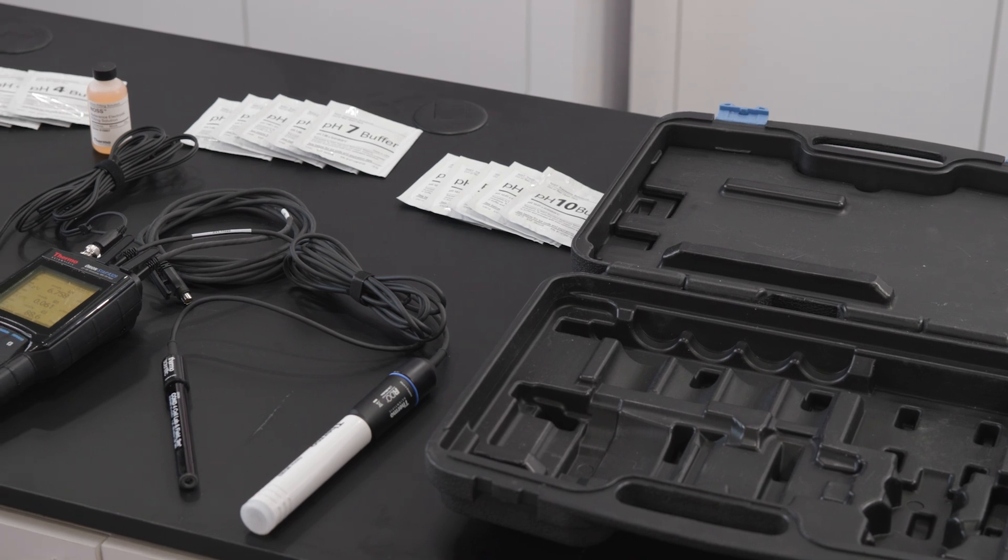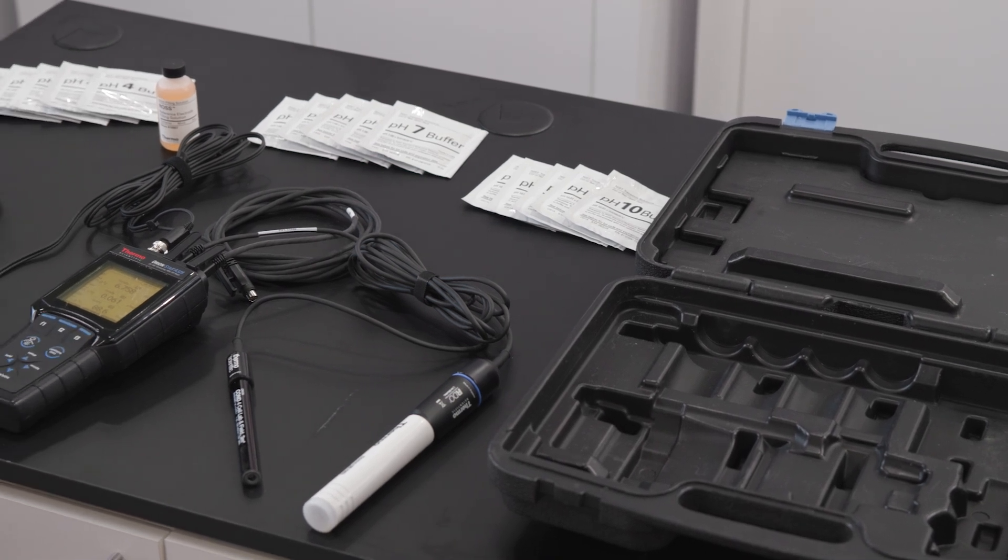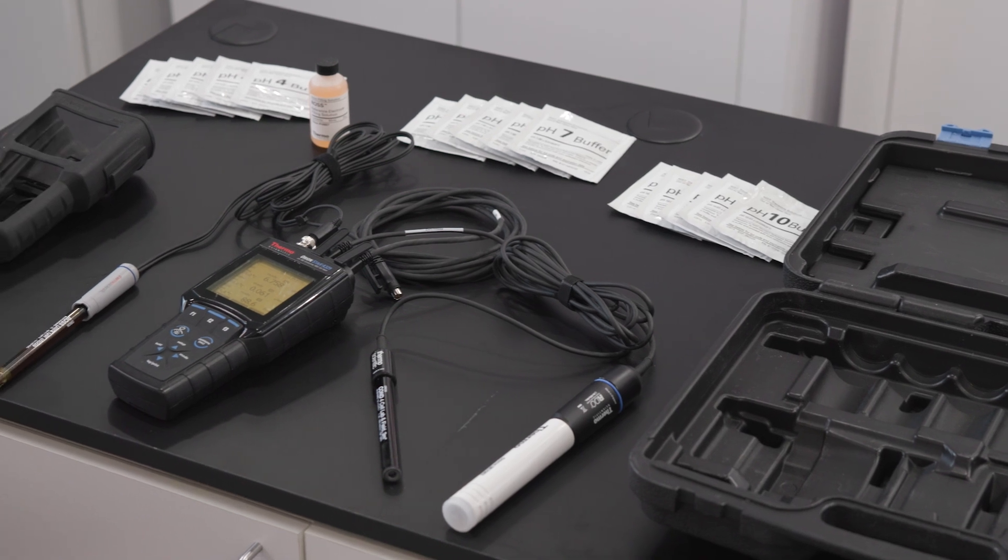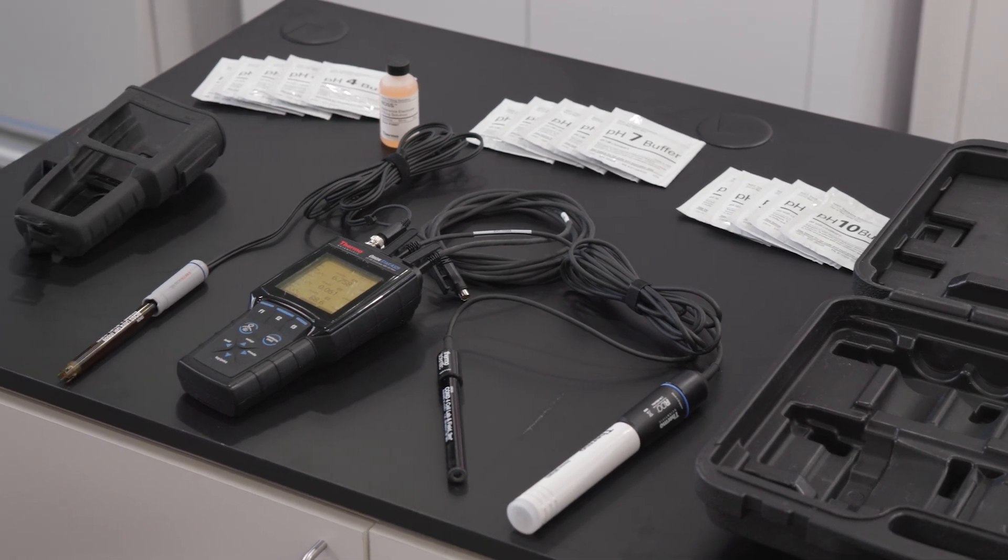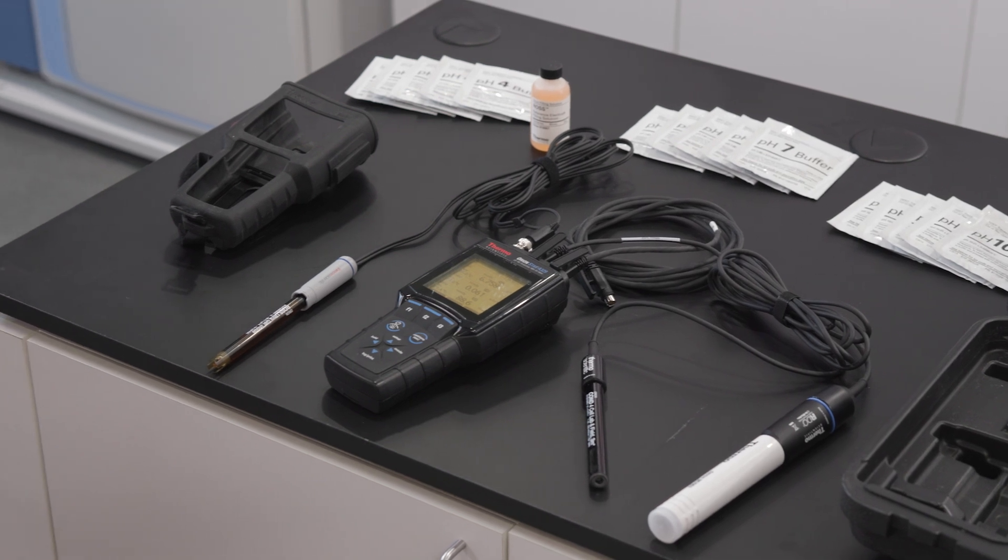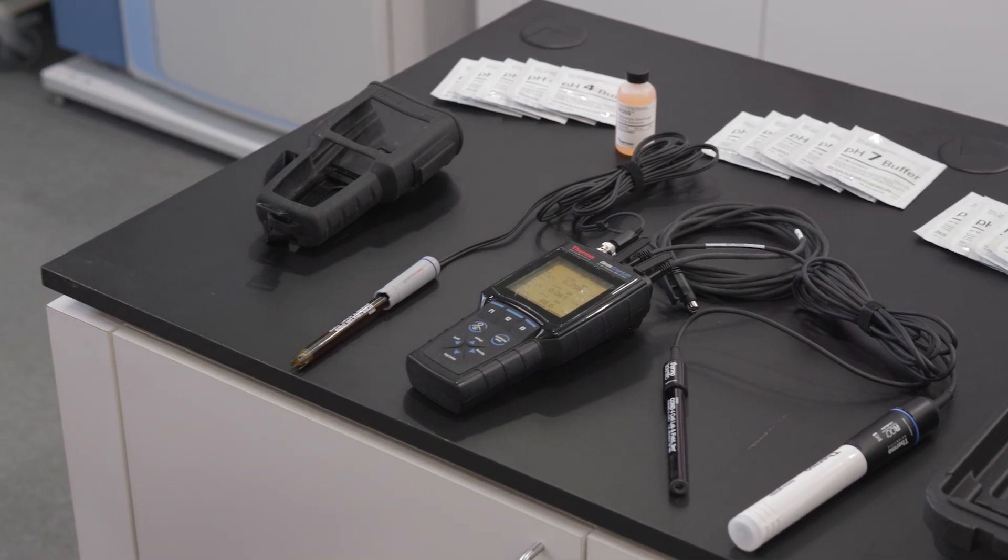Once you've identified the right meter for your needs, you may also want to consider purchasing a meter kit. Meter kits support different types of sample testing and include an electrode, applicable electrode fill solution, electrode storage solution, and pH buffer solutions all conveniently packaged in a hard-sided carrying case.